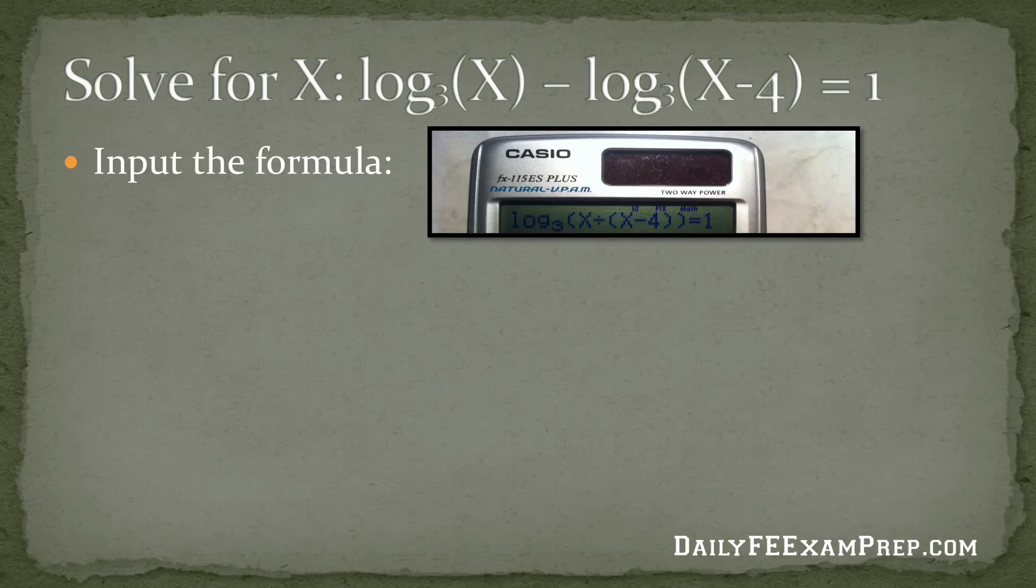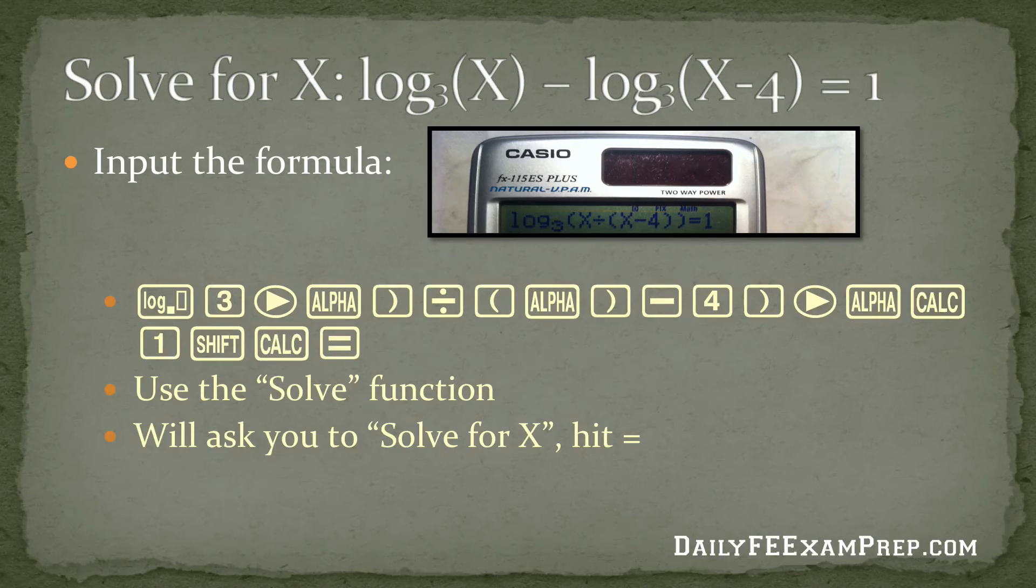So step two is we want to input the formula just as I've shown here on the photo. So this is how it's going to look like on the Casio. So how do we do that? Well, here is your stroke function. So once you get into those modes, all you need to do is hit the log button, which is on the top right hand corner of your calculator. Then hit three to define your base value. Then you want to hit right to move it inside the parentheses.